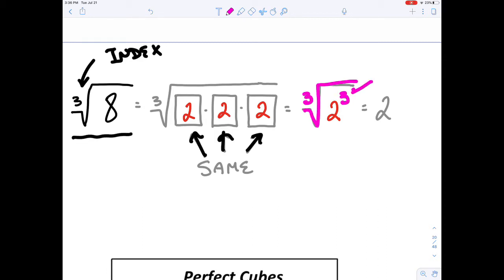And because I have the index and the exponent the same, they'll cancel each other out and we'll simply get a 2. Now, this one doesn't get the positive or negative.